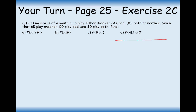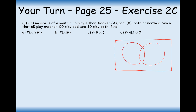Let's get started on this next question. Here we're not going to have probabilities inside our Venn diagram — we're going to have actual numbers. The amount of youths that either play snooker or pool, both or neither. Given that 65 play snooker and 50 play pool, let's label those S and P. 20 play both, so let's put that in the intersection first. Remember, fill in from the centre outwards. That leaves 30 more for pool and 45 more for snooker. Adding those gives 95, so 25 don't play either.